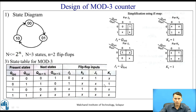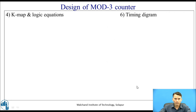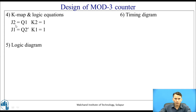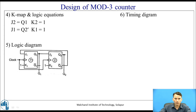For K1, the K-map has output 1 for the 01 combination and the other cells are don't cares. This again gives a quad, so K1 = 1. The final equations are: J2 = Q1, K2 = 1, J1 = Q2-bar, and K1 = 1. Based on these equations, we draw the logic diagram.